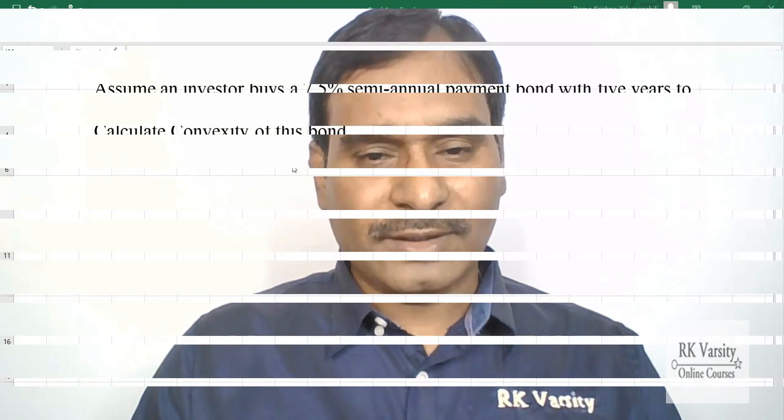Hi, welcome to RKVersity Online Classes. In this lecture, I am going to explain how to calculate convexity of a semi-annual coupon bond using Microsoft Excel. Calculation of convexity of a coupon bond is a little time-consuming and tedious. So instead of calculating it using a formula approach, it is easy to calculate that with the help of Microsoft Excel. Now I demonstrate that for you.